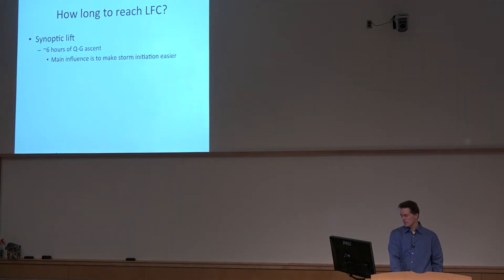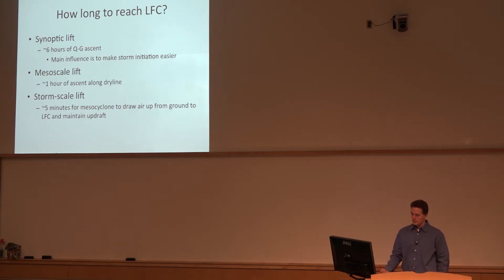But we're interested in the synoptic and the mesoscale changes and how that initiates storms. So the key is how long to reach a level of free convection. If you need at least six hours of ascent, mostly this just sets the stage in the background. We deepen the moist layer, which if you think back to the mixing discussion with the moisture return, that shelters the boundary layer from mixing. If the moist layer is deepening through ascent and horizontal advection is replacing that moisture from a source region, you come up with a deeper moist layer. It's harder to mix through that and bring dry air down from aloft. So it's easier to maintain the moist layer because it's deeper. Mesoscale lift again, one hour of ascent along the dry line, and then five minutes within a supercell just to draw the air up from the surface to the level of free convection.